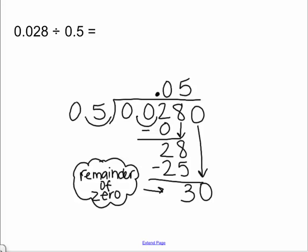Now, we can go ahead and divide 5 into 30. It goes in 6 times. 6 times 5 is 30. Subtract. And you get your remainder 0.